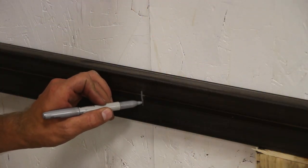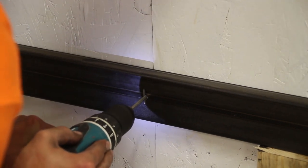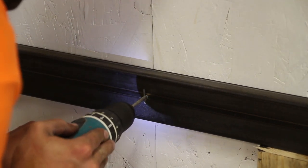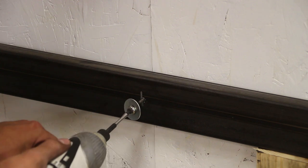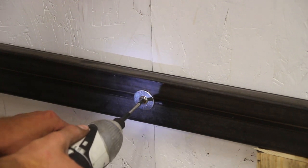Next I mark for the stud on the one by three tubing and drill and drive a three inch screw to secure it to the wall. I use both a finish washer and a fender washer to prevent the screw from bending the tubing.